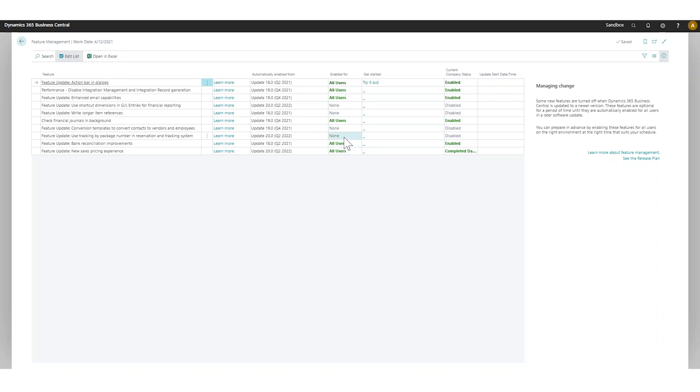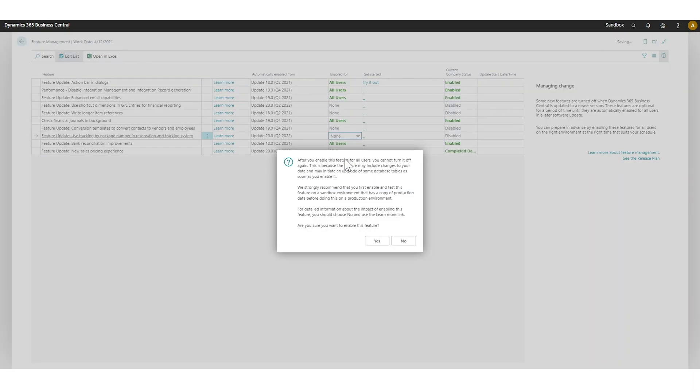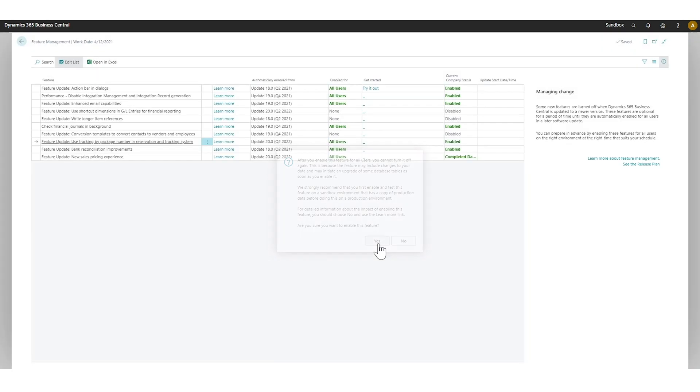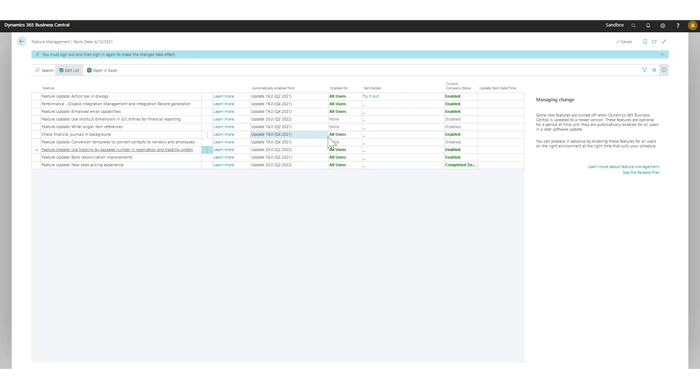So when you actually try to turn something on here like if I go in here and just say for all users, it'll tell me or give me this warning here and ask me if I'm sure I want to do this. If I say yes it's going to enable it.